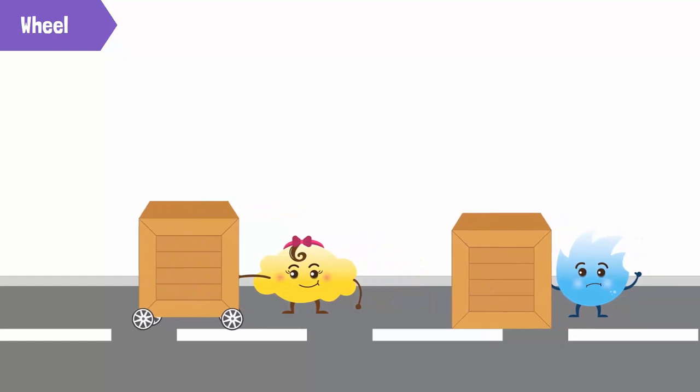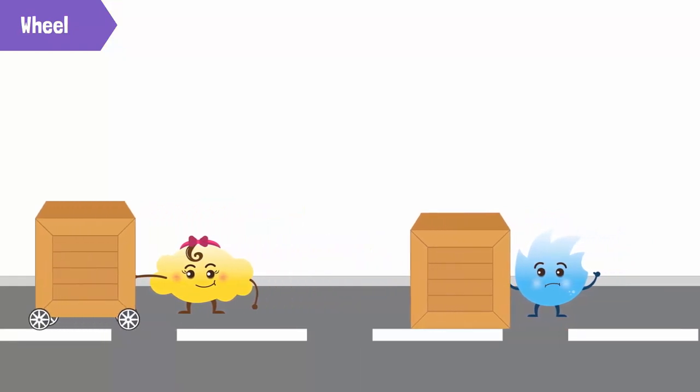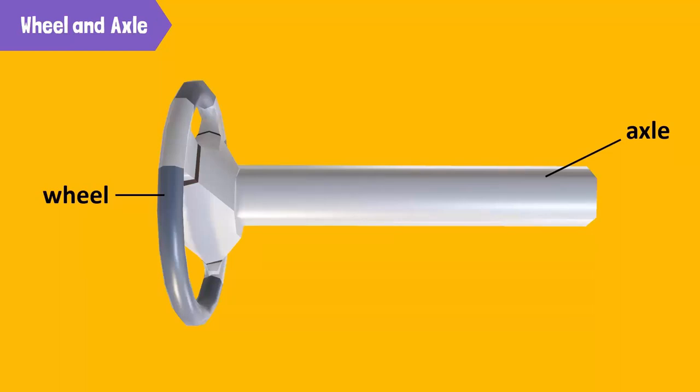It is easier to drag an object with wheels compared to an object without wheels. The wheel and axle is a modified form of the wheel in which a shaft or a wheel of a smaller diameter called an axle is attached to the wheel.